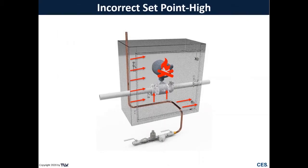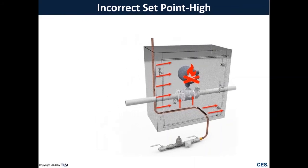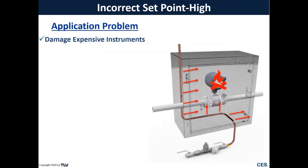Next is an incorrect set point that is too high. In an instrument enclosure with a tracing line, the purpose is to keep instruments warm and prevent freezing. But if your temperature-adjustable steam trap is set too high, you'll give too much heat into that enclosure, potentially damaging expensive electronics and causing process issues. This can also cause a shorter steam trap service life due to steam leaking through.